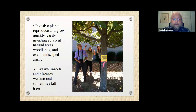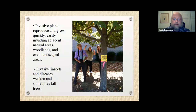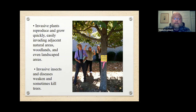Invasive plants reproduce and grow quickly, easily invading adjacent natural areas, woodlands, and even landscaped areas. Invasive insects and diseases weaken and sometimes kill trees or make them hazardous. This photo shows the beginning of the last outbreak of Asian longhorn beetle in the Farmingdale quarantine area, around 2013. This was a red maple — if you look closely at the trunk above and below the yellow quarantine sign, you'll see little exit holes. This tree was riddled with literally hundreds if not thousands of exit holes from the Asian longhorn beetle.